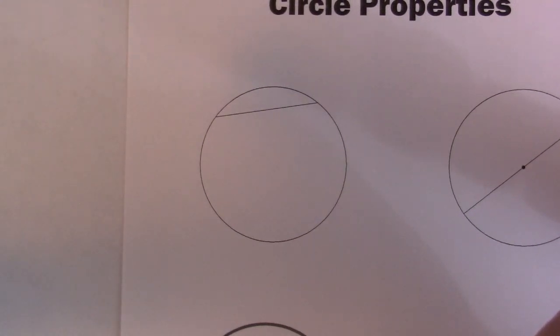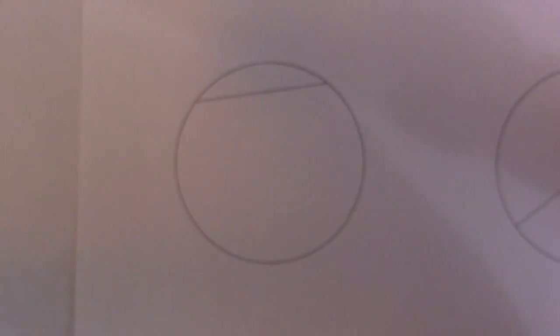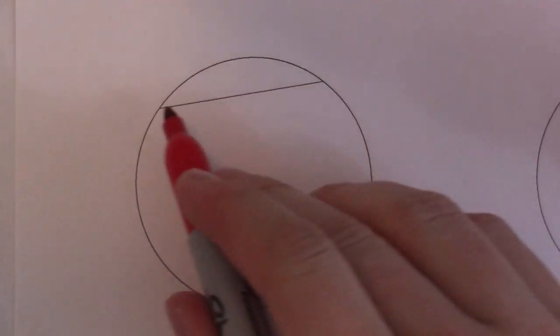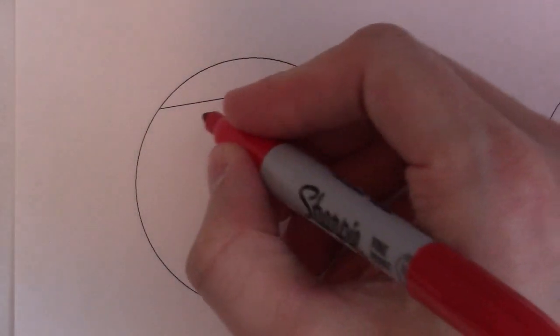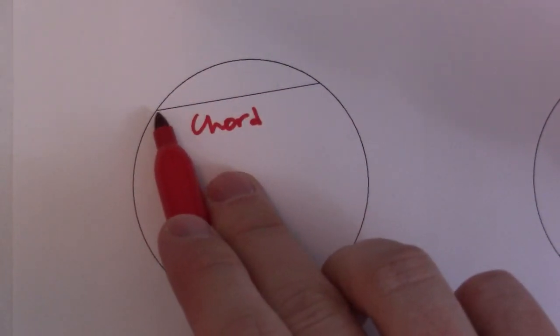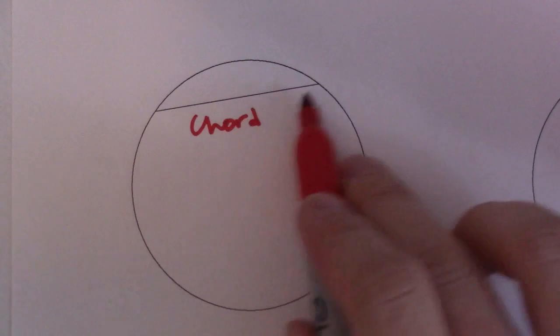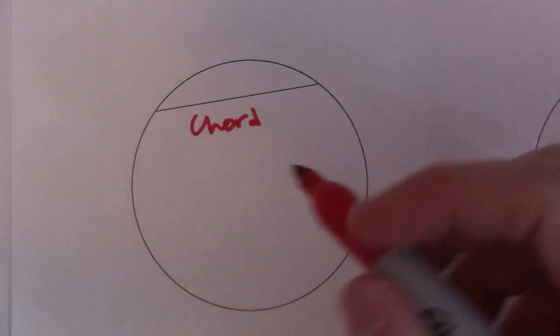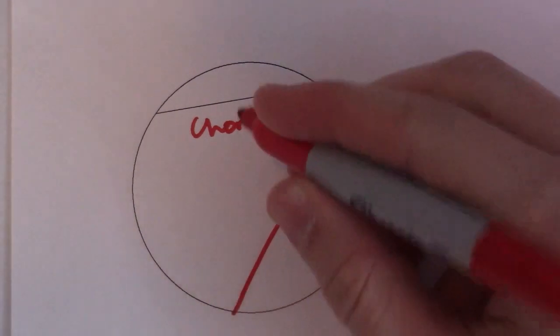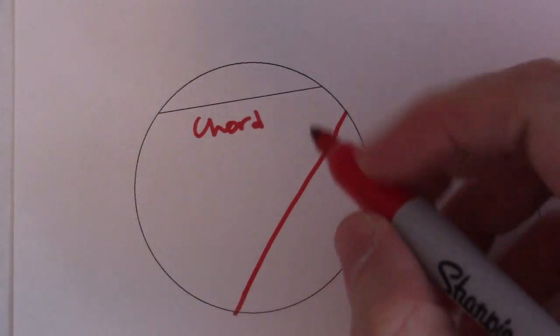Circle properties - some more circle properties and definitions that you might come across. If you look at this circle, I'm just going to zoom in a little bit so you can get a better idea. So this guy right here is called a chord. A chord connects any two points in the circle, so it just goes across.